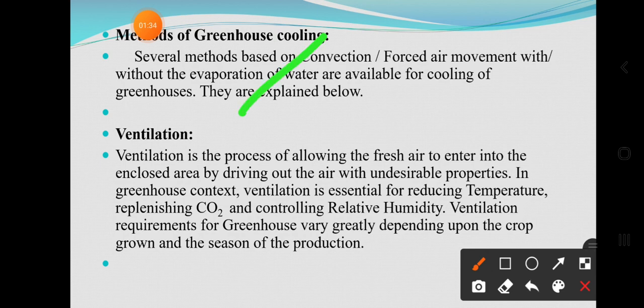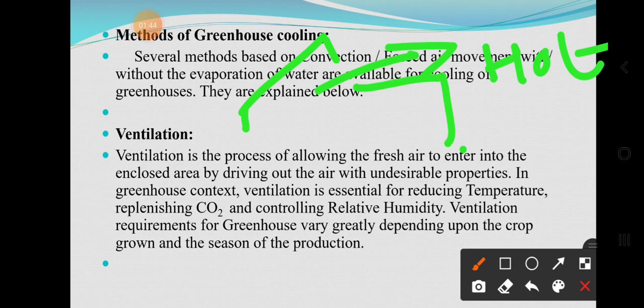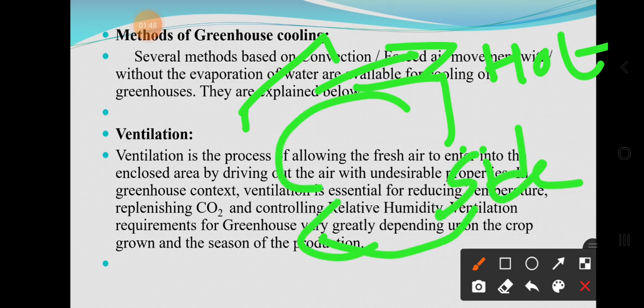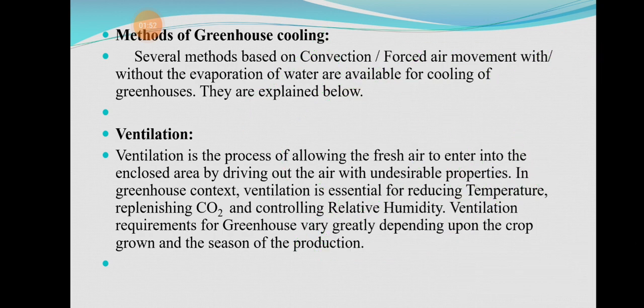In the greenhouse, there is ventilation. There are top ventilators at the top from where the hot air is removed, and from the side ventilators there is entry of fresh air, and this continuous ventilation is maintained. In the greenhouse context, ventilation is essential for reducing temperature, replenishing CO2, and controlling relative humidity.